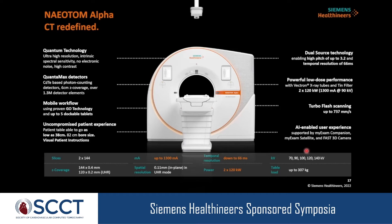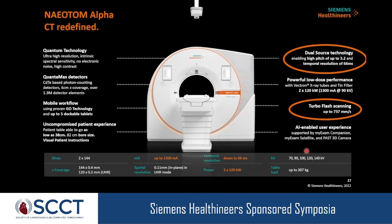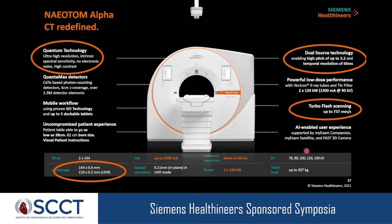The system is the NAEOTOM Alpha — a dual-source system providing temporal resolution of 66 milliseconds independent of heart rate, high-pitch scanning at more than 70 centimeters per second, equipped with two photon counting detectors allowing higher resolution and always-available spectral information.